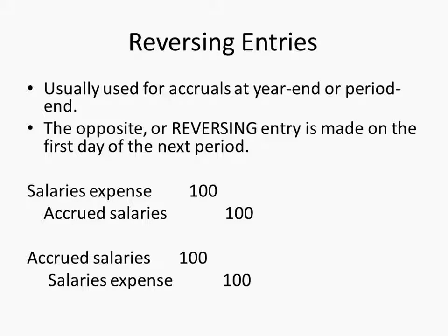And we now know the rationale of why you do that — because then you go ahead and just do everything normally. The person who gets the payroll just makes the same journal entry as normal. But the net effect of the reversal is that it takes the expense — if they're debiting the full amount of the expense in the next period and then you have this credit there, it nets the expense to what the appropriate amount is for that period.